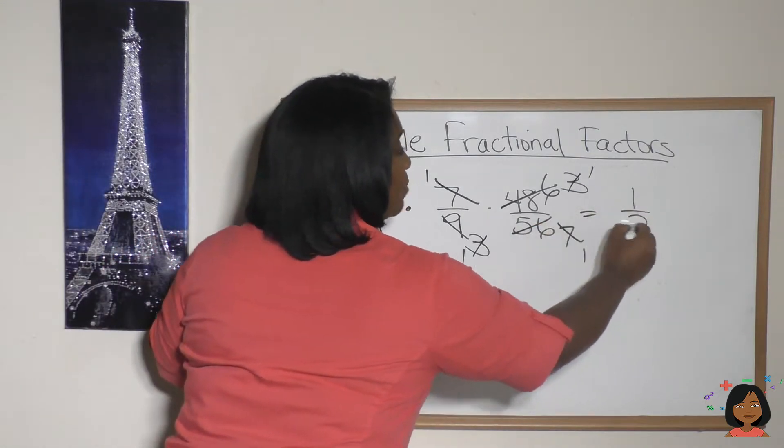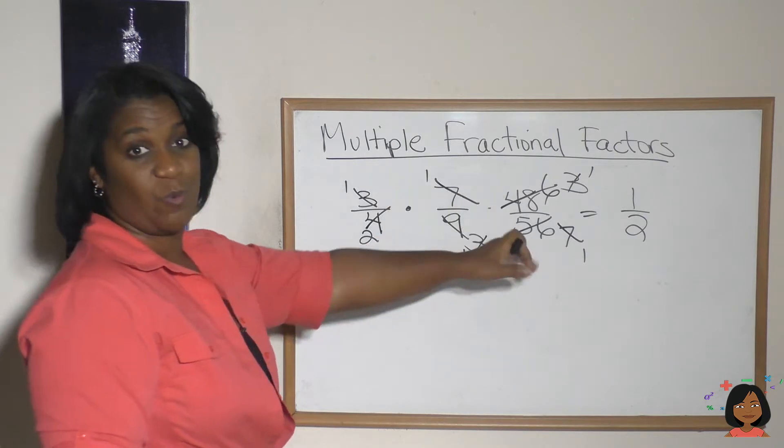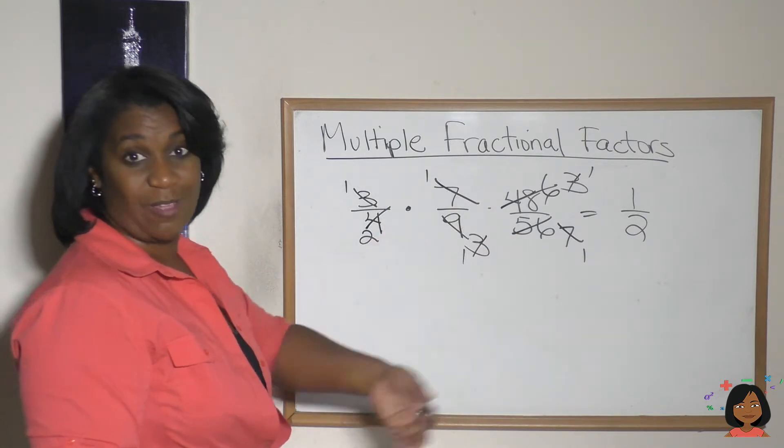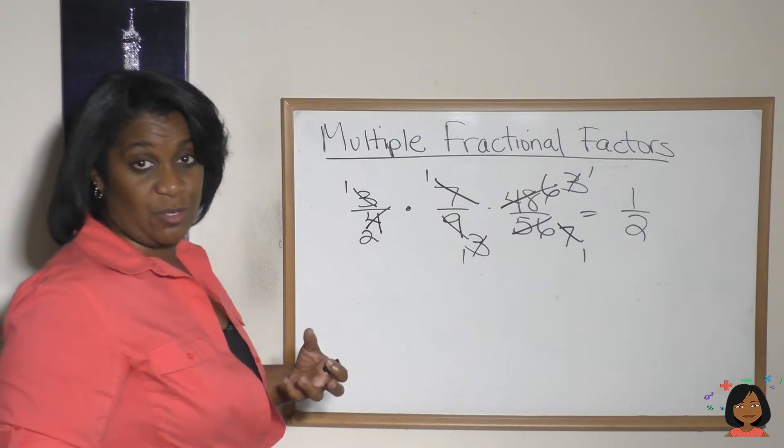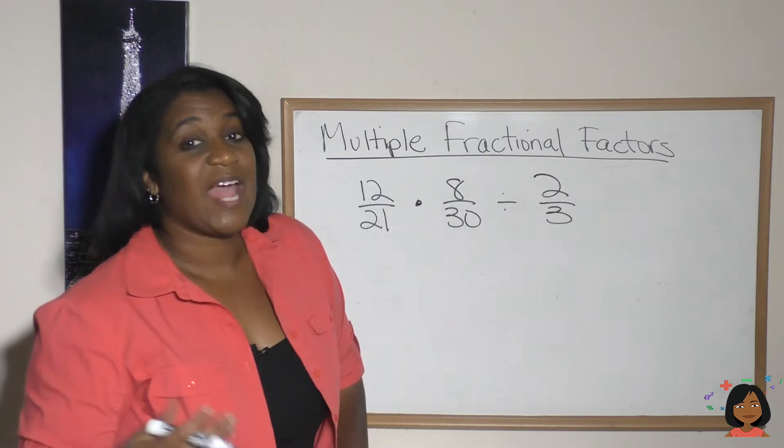All that work, it turns out our answer when we multiply is really just one-half, right? One times one times one, and two times one times one. It's that simple. So when you're multiplying, look to reduce and then multiply across.